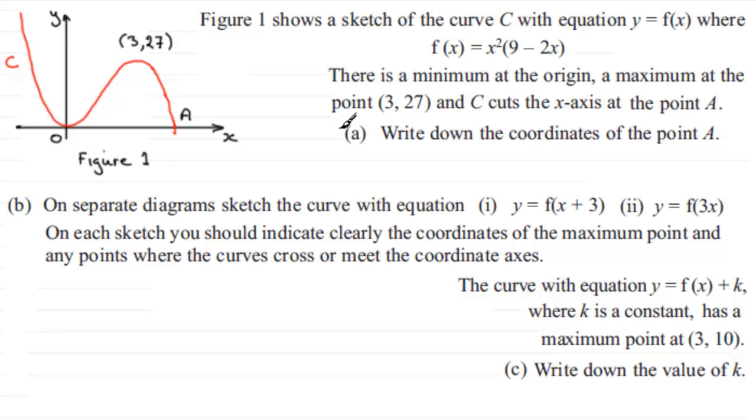C cuts the x-axis at the point A. In the first part we've got to write down the coordinates of point A. So writing it down would seem to suggest that it's pretty obvious what it is. The answer for that point is x equals 9 over 2.